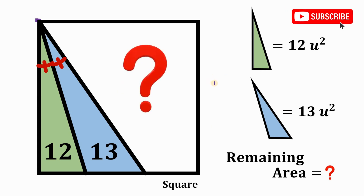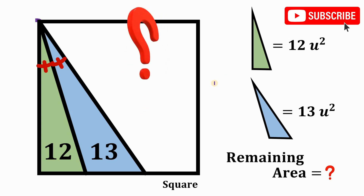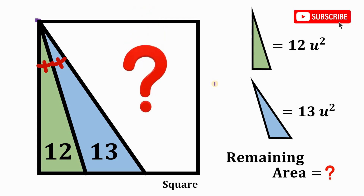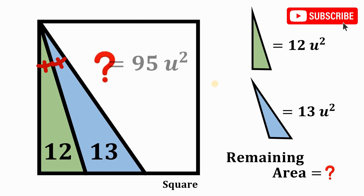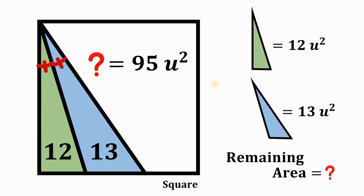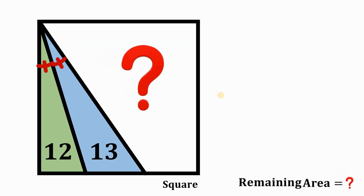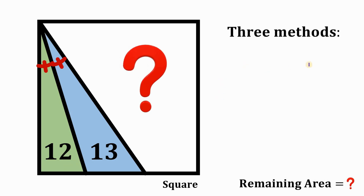The question is: what is the area of the white region, or the remaining region of this square? Pause the video and see if you can answer this question. We will have three possible solutions for this kind of question. The answer is simply equal to 95 square units — the remaining area is 95 square units.